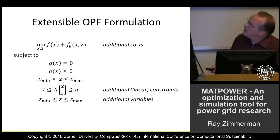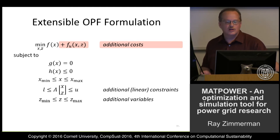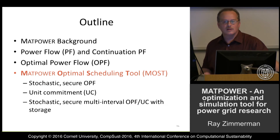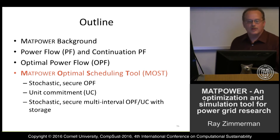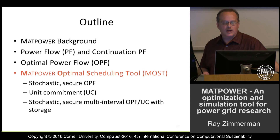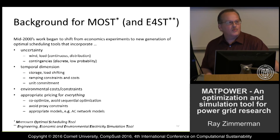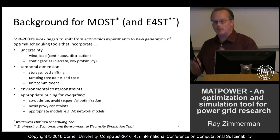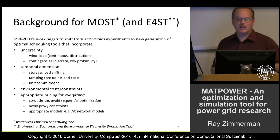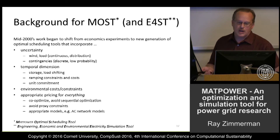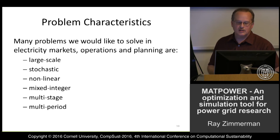MAP Power includes additions to the standard formulation, such as user-supplied additional costs, constraints, and variables, allowing the user to customize the problem being solved. The latest addition is the MAP Power Optimal Scheduling Tool, which expands the problem in other dimensions. Around the mid-2000s, we began shifting work to tools that incorporated uncertainty for renewables, security considerations, and the temporal dimension including storage and unit commitment.